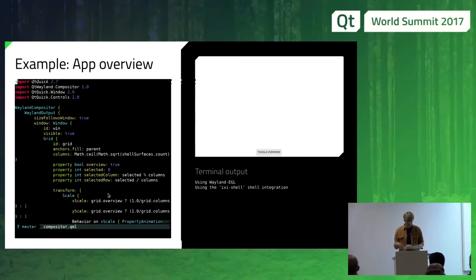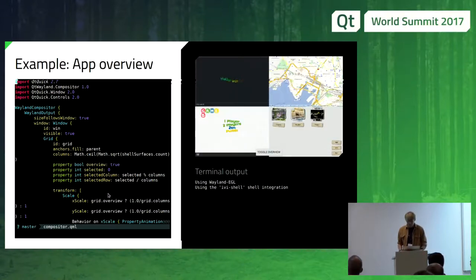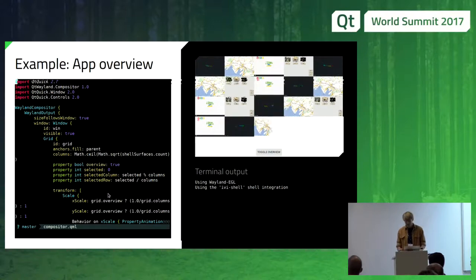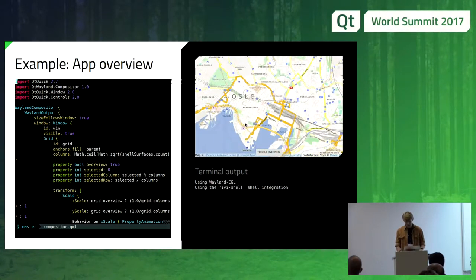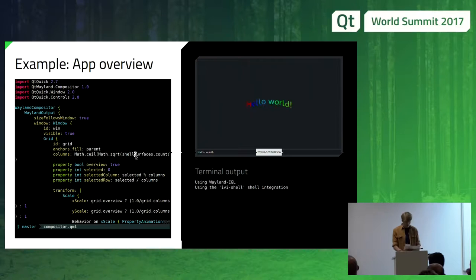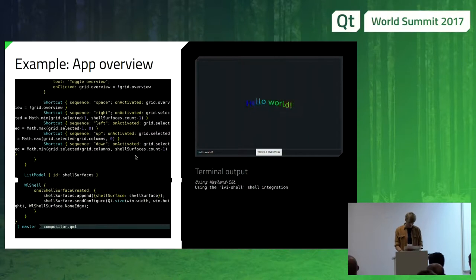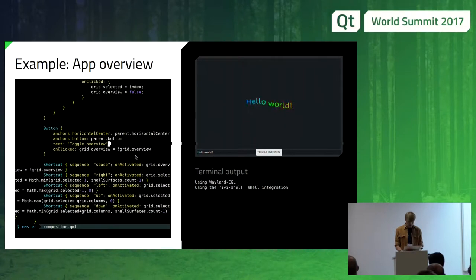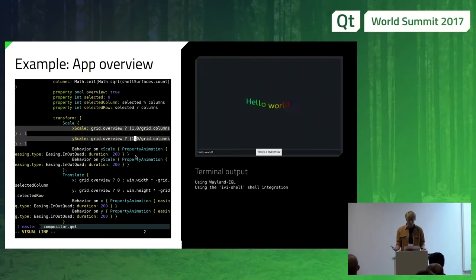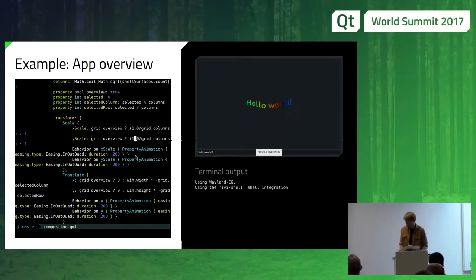Here's another compositor I wrote. It starts clients in a grid. If I launch a couple more, it scales automatically to fit all of them. I can click individual clients, go back and forth, or use the keyboard to navigate between them. The entire code is shown here — most of it is just keyboard bindings. The important thing is transforming the grid whenever the overview is activated and disabling inputs.